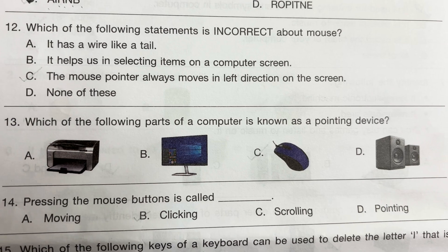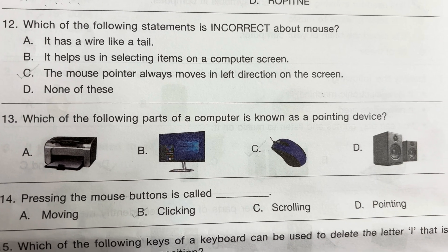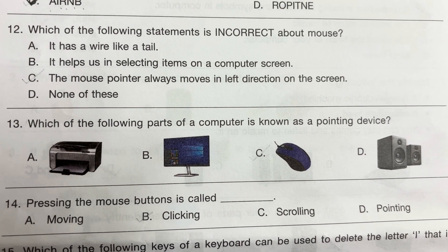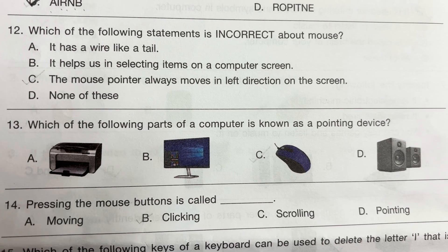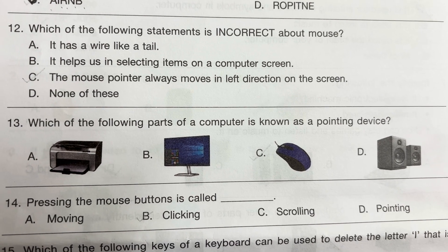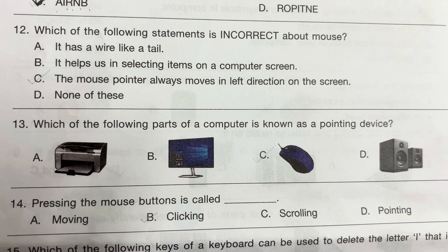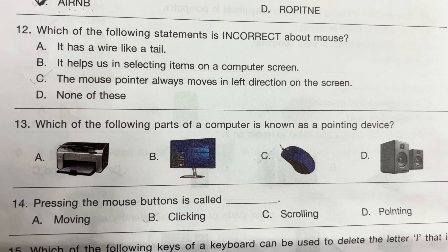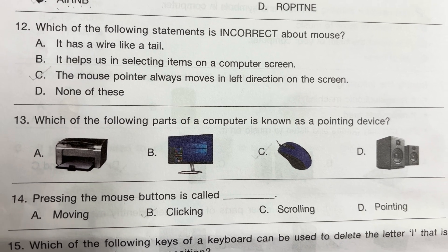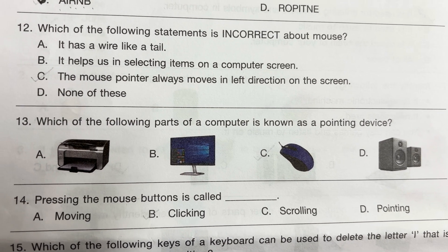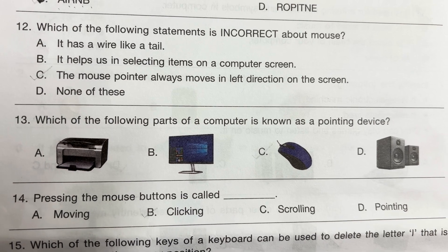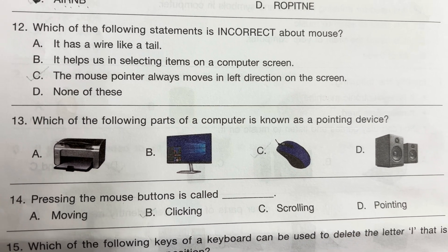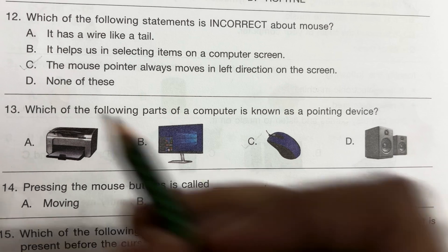Question 12: Which of the following statements is incorrect about the mouse? Option A: It has a wire like a tail — correct. Option B: It helps us in selecting items on a computer screen — correct. Option C: The mouse pointer always moves to the left direction on the screen — this is wrong. So C is the incorrect statement.